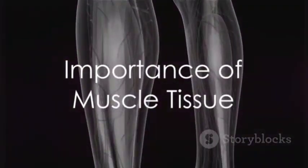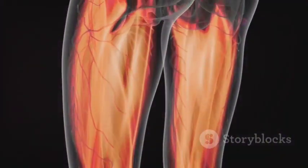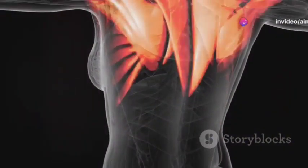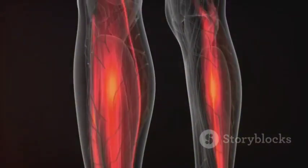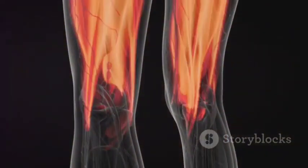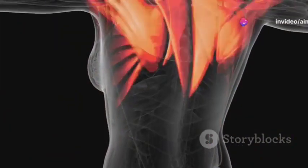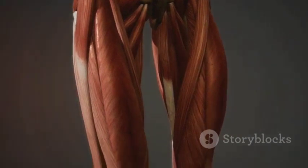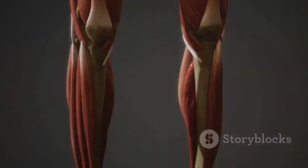Each type of muscle tissue plays a vital role in our bodies. Skeletal muscle provides strength and mobility, cardiac muscle ensures efficient circulation, and smooth muscle aids in organ function and overall physiological homeostasis. In conclusion, muscle tissue, with its diverse types — skeletal, cardiac, and smooth — is a fundamental and vital component of the human body. Each type plays a distinct role in maintaining our health and facilitating bodily functions. Understanding the characteristics and functions of each muscle tissue type is key to comprehending the complexities of human anatomy and physiology.